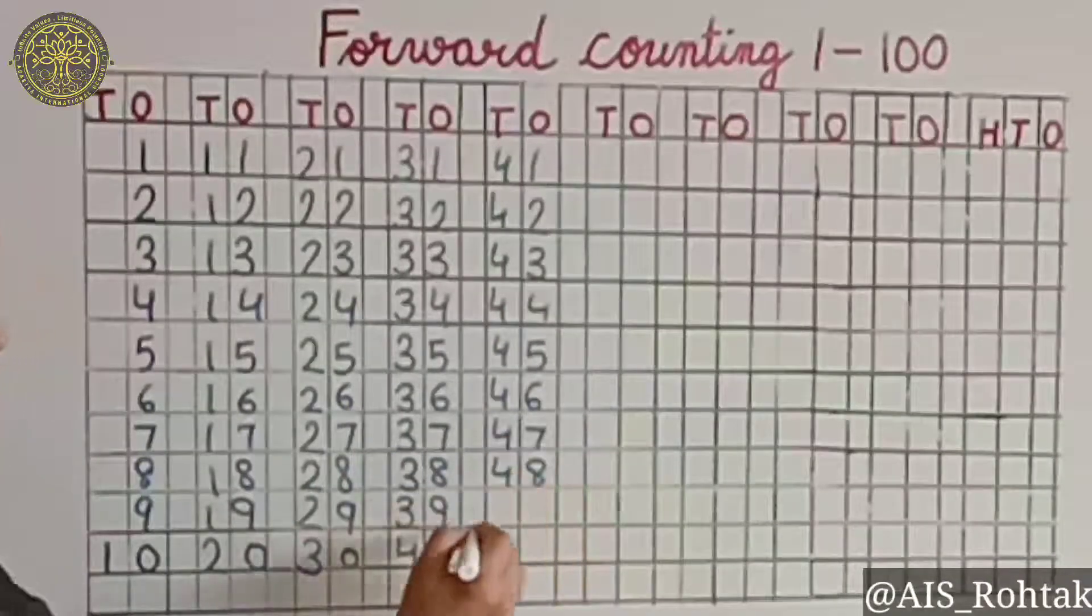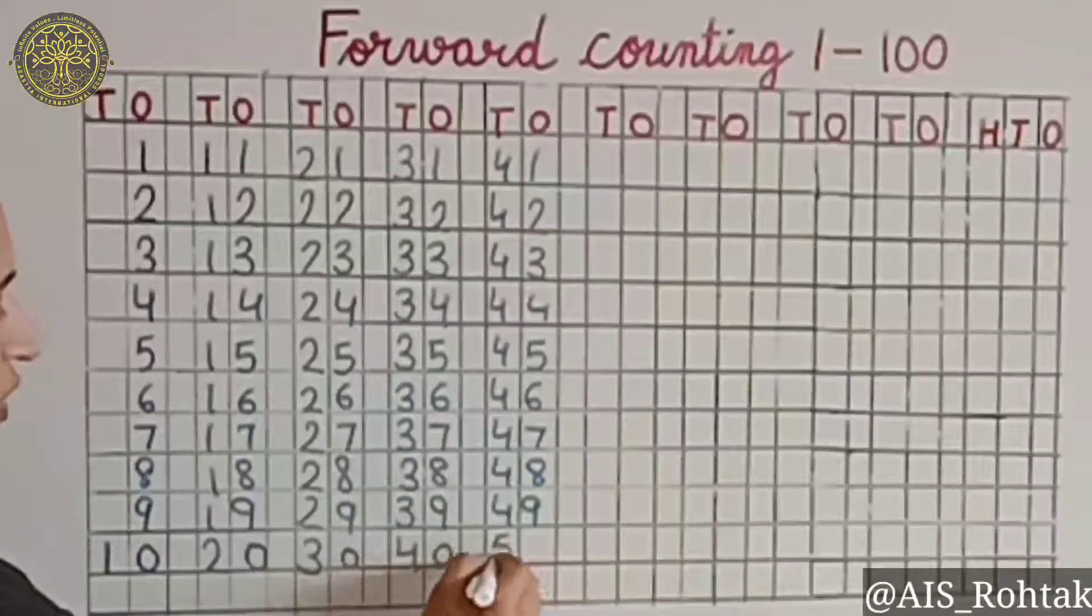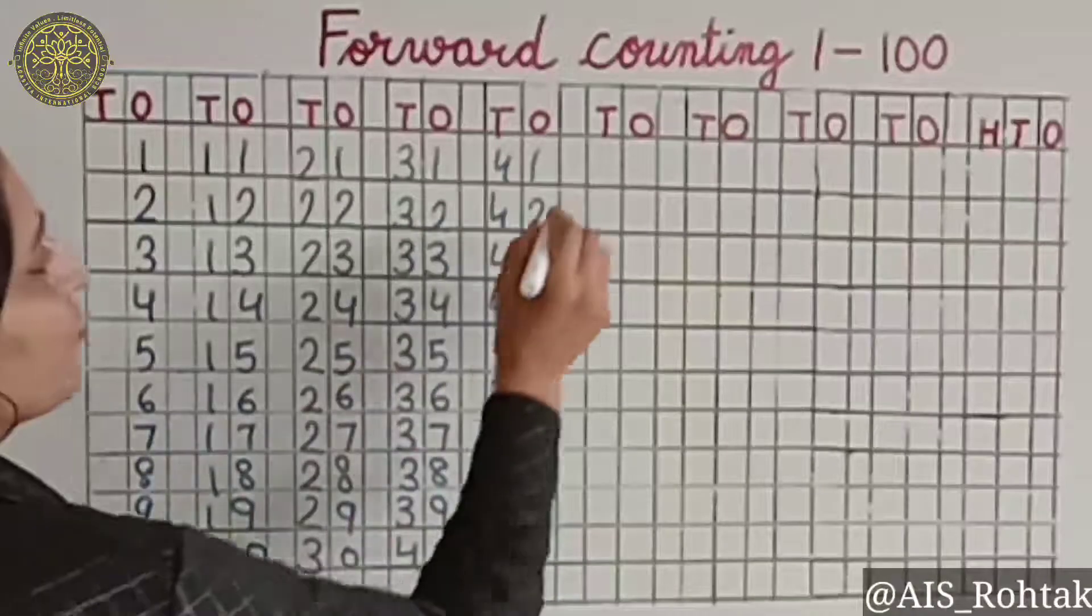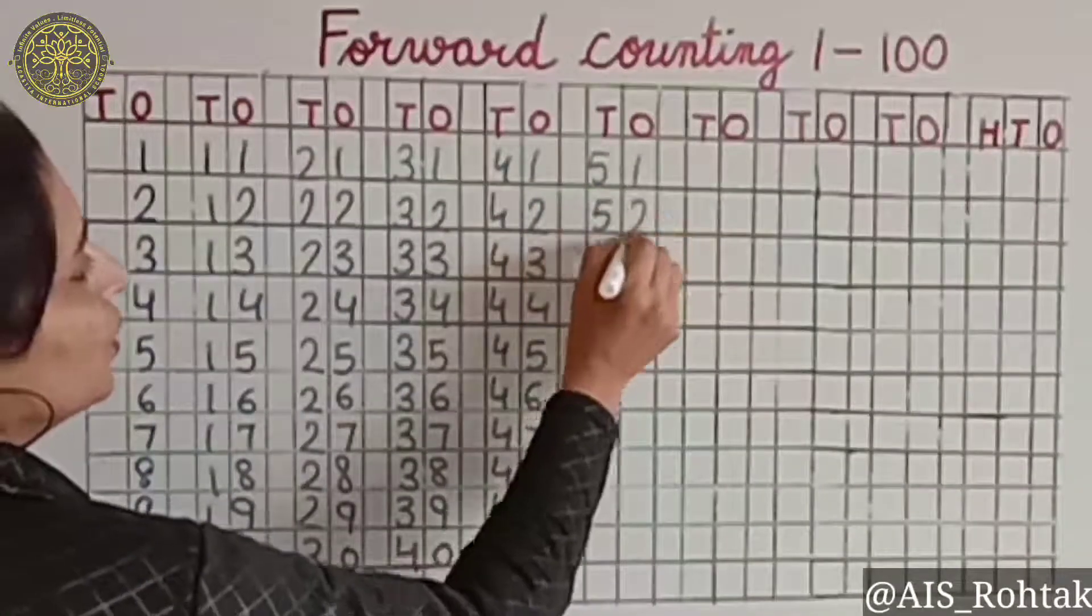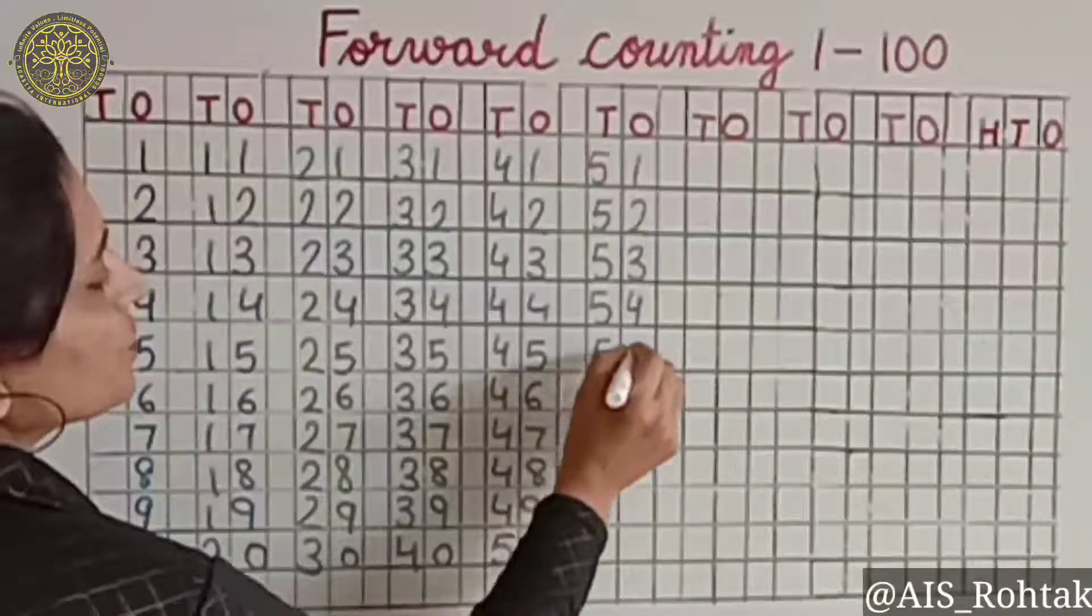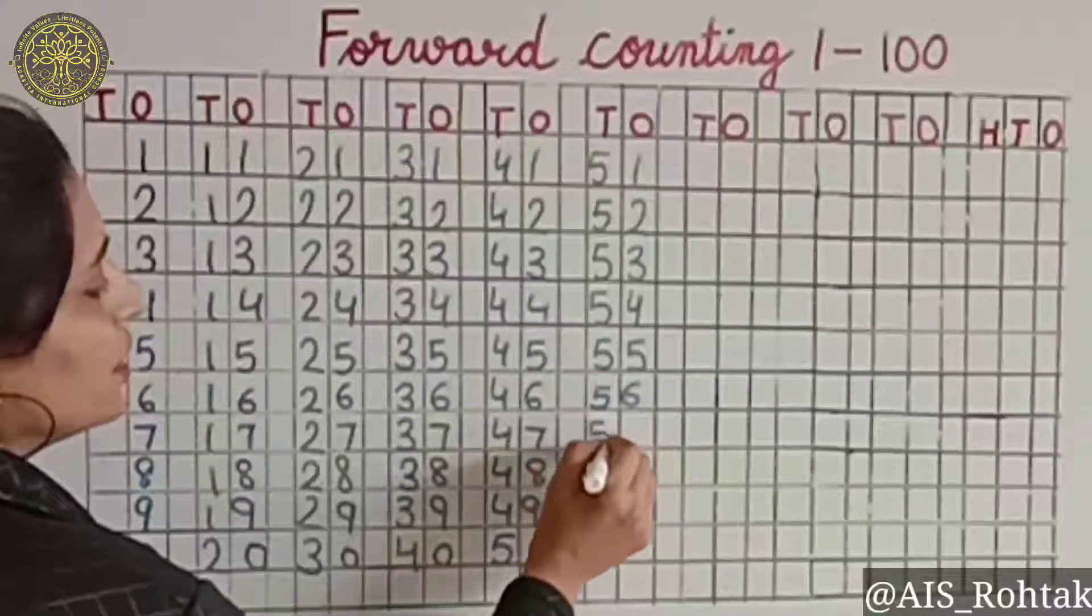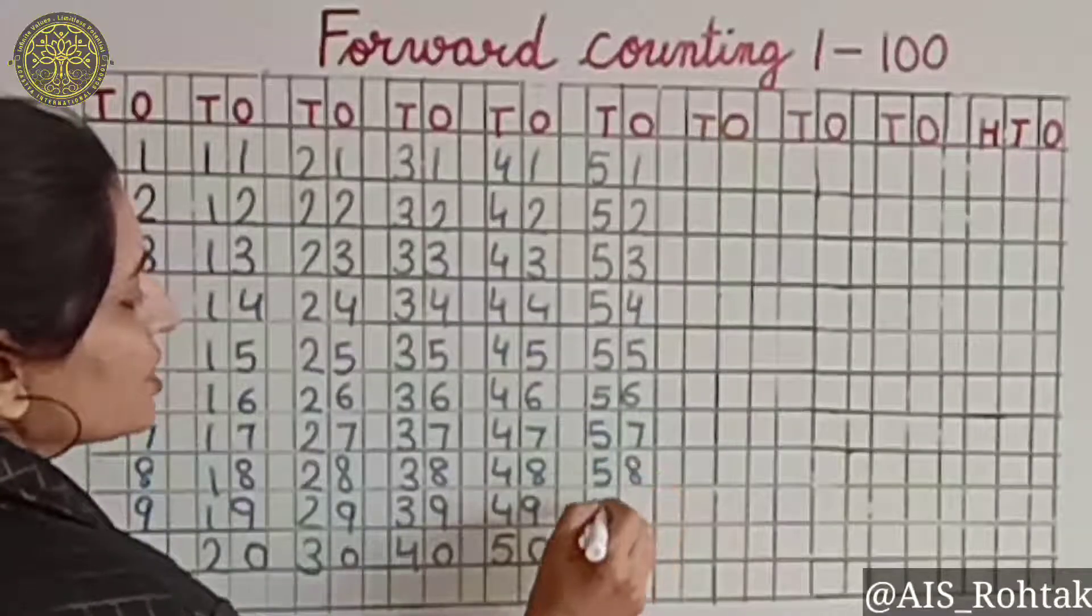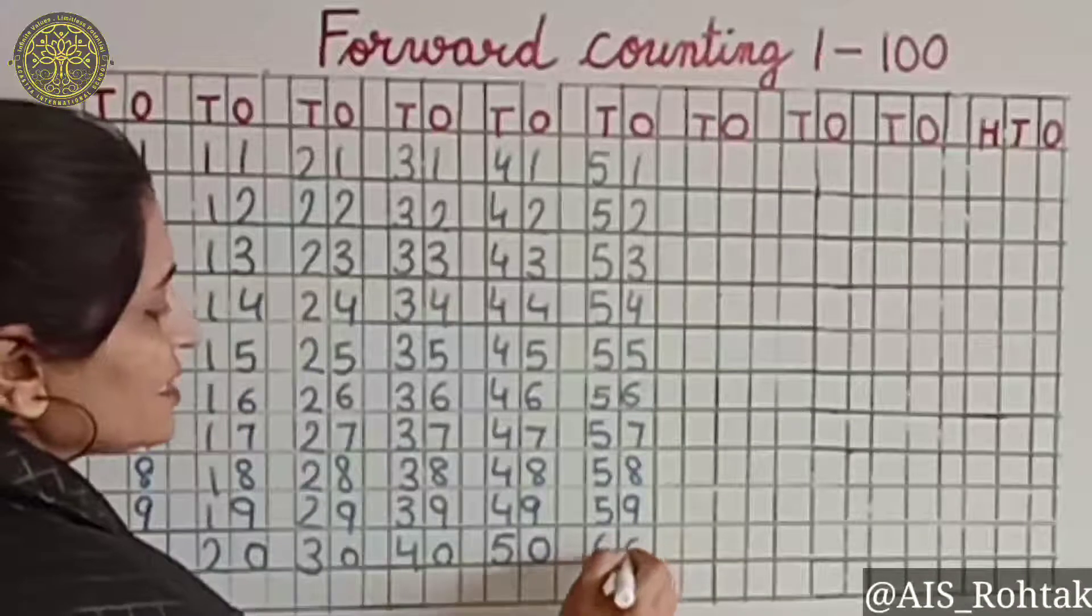48, 49. And now we have 50, 51, 52, 53, 54, 55, 56, 57, 58, 59, 60.